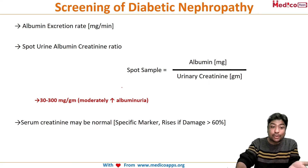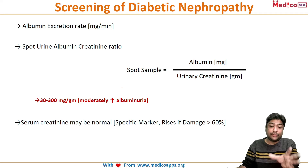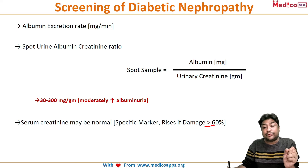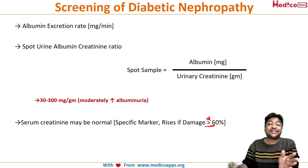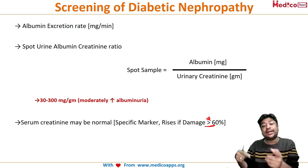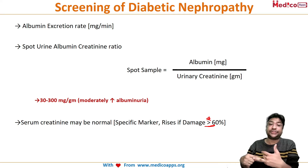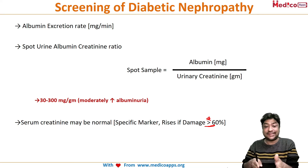A third test commonly used is serum creatinine. However, serum creatinine only starts rising when there is almost 60% kidney damage. So you should not wait for serum creatinine to increase — instead use the albumin excretion ratio or spot urine albumin-creatinine ratio to detect nephropathy even in the pre-nephropathy stages, especially in poorly controlled diabetic patients.